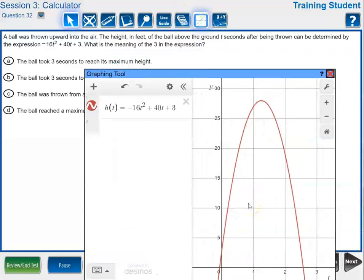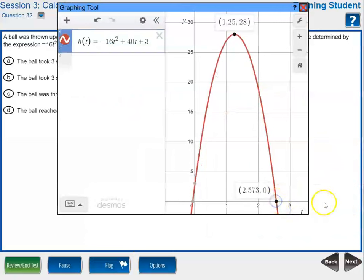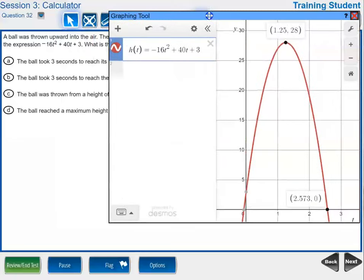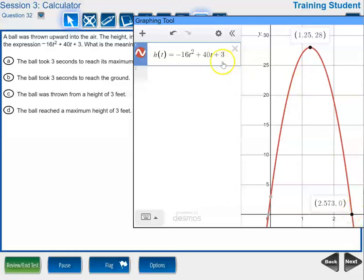All right it wants to know the ball took three seconds to reach its maximum height. Well hopefully your students know maximum vertex. So if they'll click on vertex you'll see the number three is nowhere in there. The 1.25 is actually the time that it took. So that answer choice is wrong. It says it took three seconds to fall to the ground. Well it's close to three seconds but it's not three seconds. It's a little over two and a half seconds. They might decide to pick that one because it does round up. But hopefully they know that's not the correct answer because that is not going to be appearing as the intercept in the equation. The ball is thrown from a height of three feet. Well if you click here there's that three. And then of course it reaches a maximum height of 28 feet. So the only answer that really works is the correct answer. So the correct answer was C.